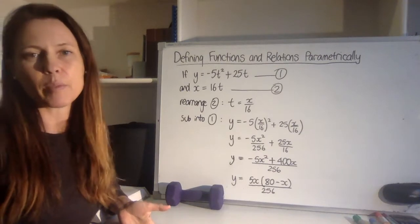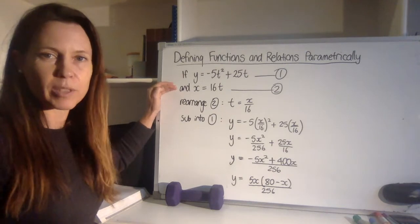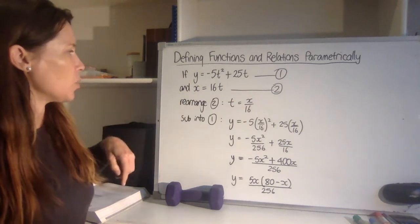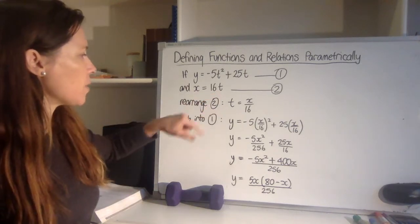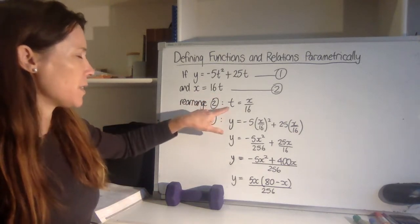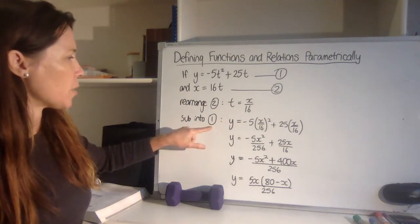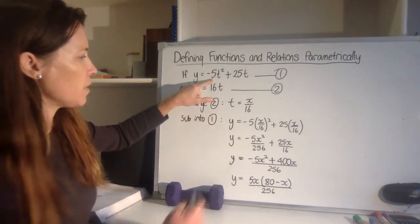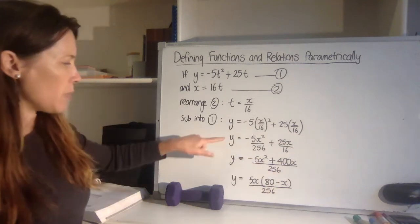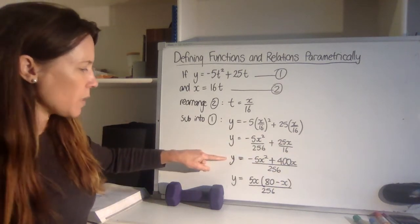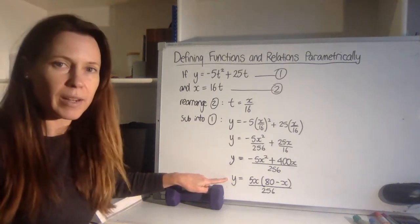But instead of setting up a table of values, we can also use our algebraic skills and solve our two equations simultaneously. So call them equation 1 and 2, and then look for the one that's easiest to get the parameter by itself. So in this case, I've picked the second one and I've rearranged it to say let's let t equal x over 16. At that point, I can sub it into the first equation. So minus 5 x on 16 squared plus 25 x on 16 can be tidied up like this. And then by making a common denominator and factorizing it, I've got it into a form where I can appreciate that it is an upside-down parabola.